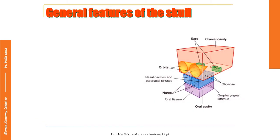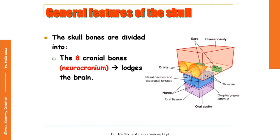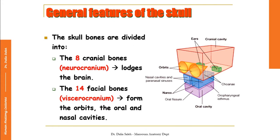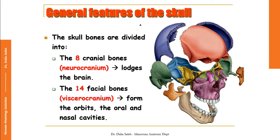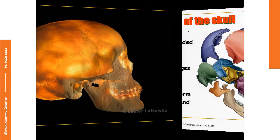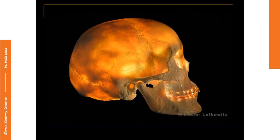Now let's look at the general features of the skull. The skull bones are 22 in number and are divided into eight cranial bones — we call them the neurocranium — because when they articulate with each other they form a case that lodges the brain. We also have 14 facial bones, which we call the viscerocranium. When they articulate, they form cavities that lodge the viscera of the head, like the orbits, the oral cavity, and the nasal cavities. In this diagram you can see the different bones of the skull. The neurocranium, or the part that lodges the brain, is thinner than the facial bones, and the thinnest bone is the parietal bone at the periphery of the skull cap.